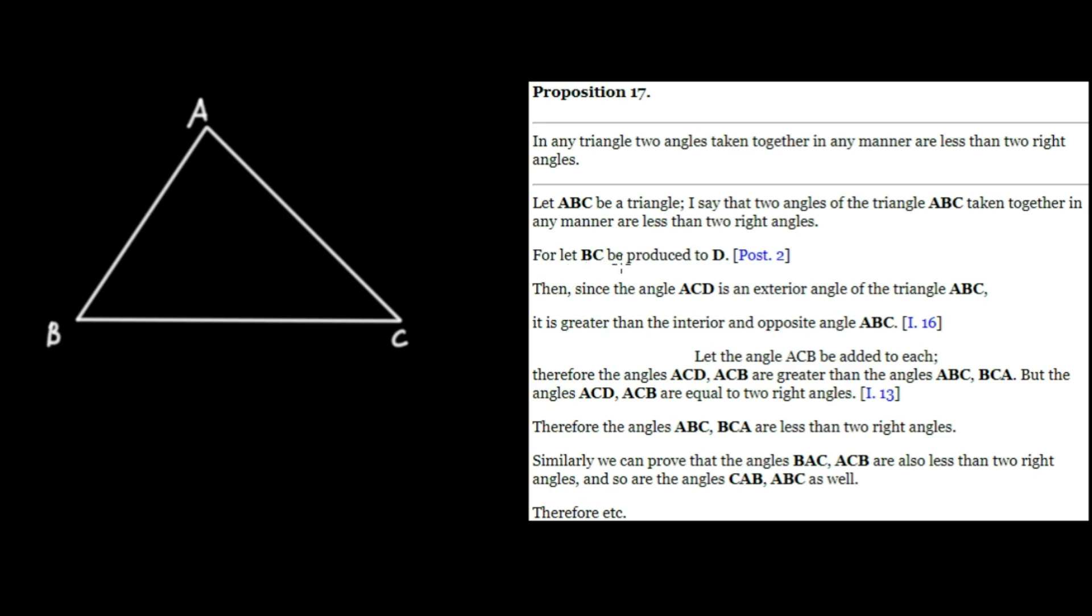Next, for let BC be produced to D. Now we're going to go ahead and prove this. So we're going to extend BC to D, which we can certainly do by postulate 2. We'll call this D over here.